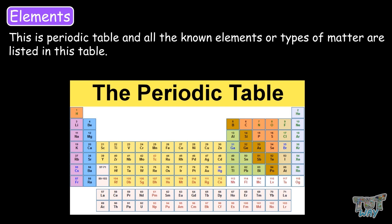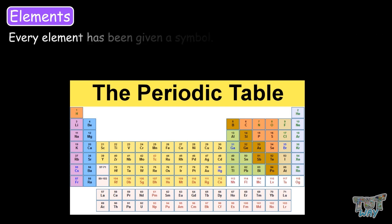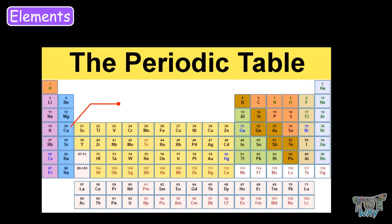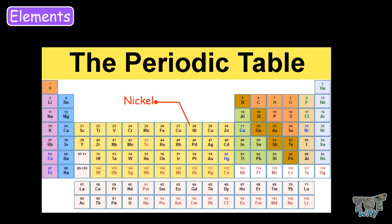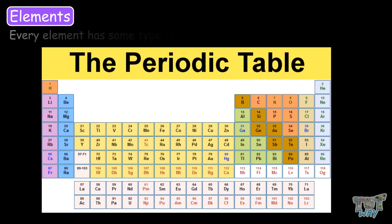These are all the elements. Every element has been given a symbol. CA stands for calcium, CU stands for copper, NI stands for nickel, O stands for oxygen, and so on and so forth. And every element has the same types of atoms only.